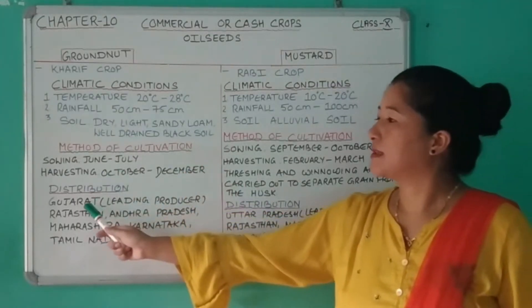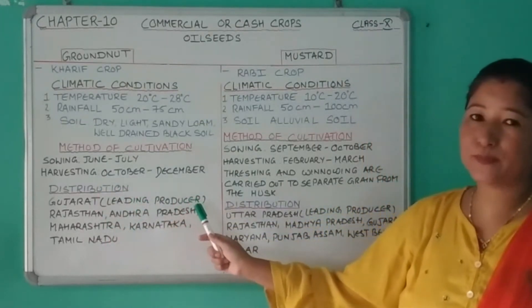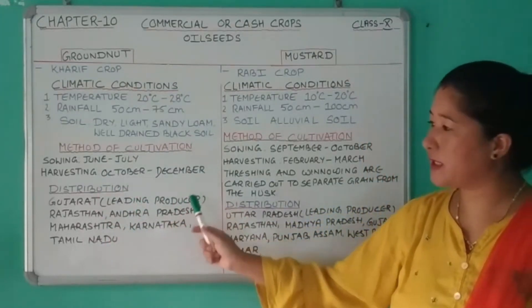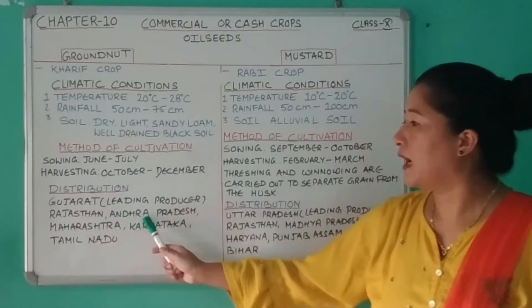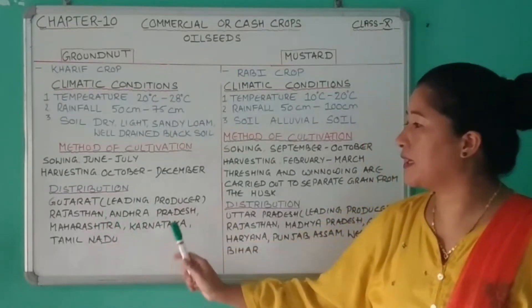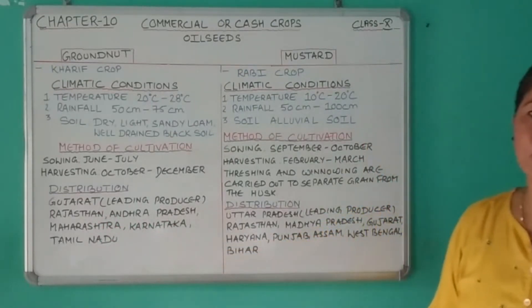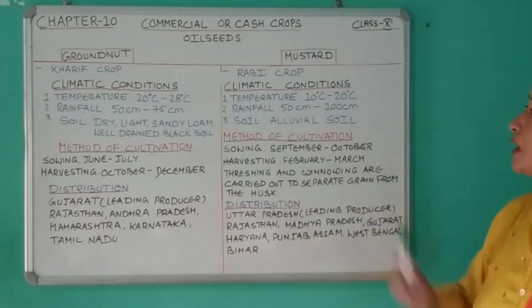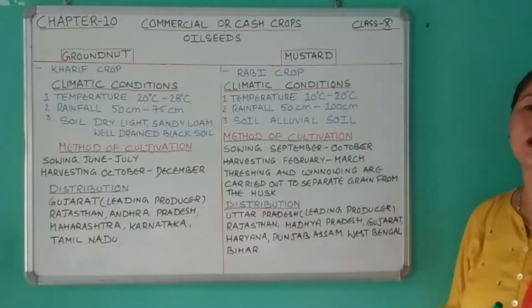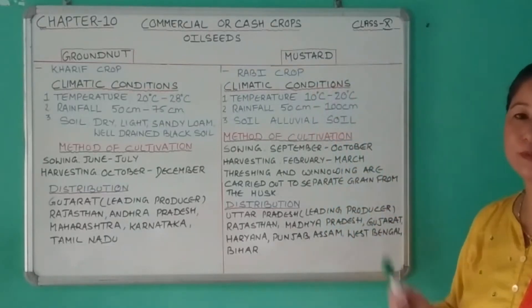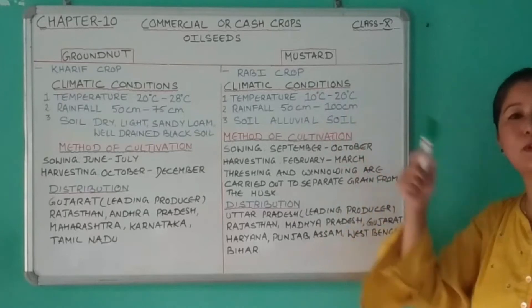Now let's see the distribution. Gujarat is the leading producer of groundnut, followed by Rajasthan, Andhra Pradesh, Maharashtra, Karnataka, and Tamil Nadu.